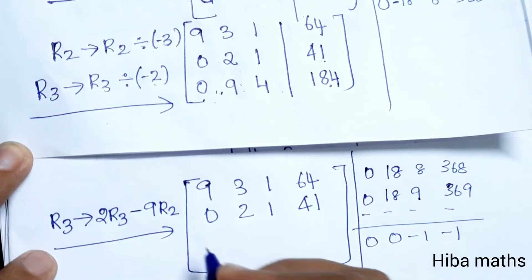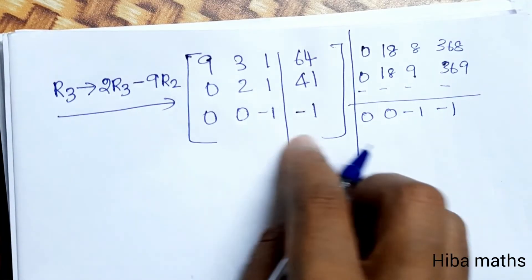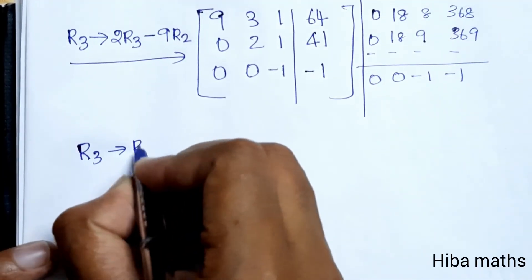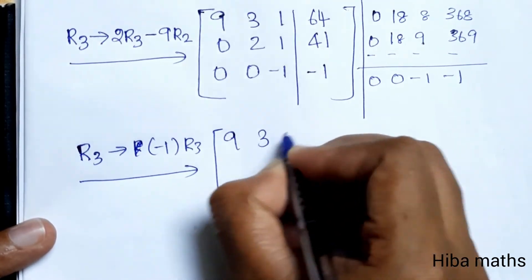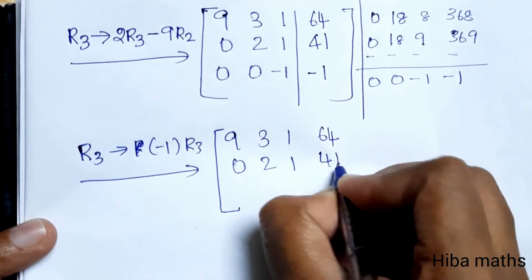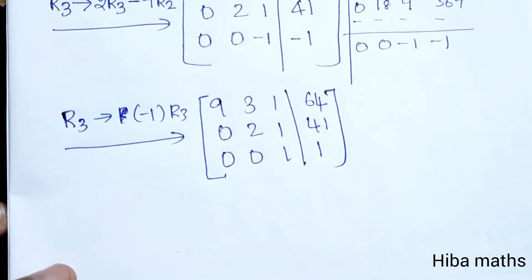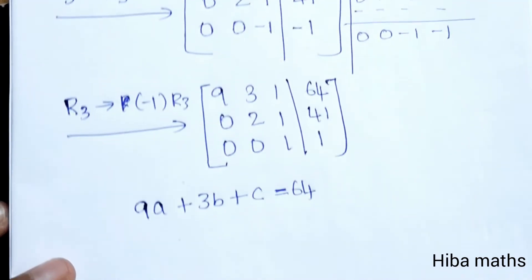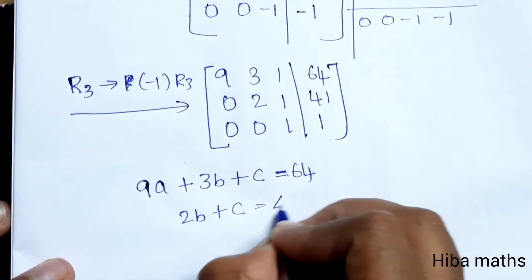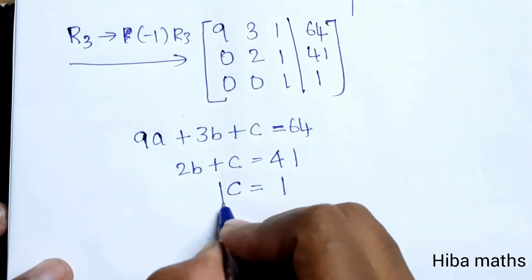So the final upper triangular matrix gives us: 9a + 3b + c = 64, 2b + c = 41, and c = 1. Now we do back substitution. C is equal to 1.